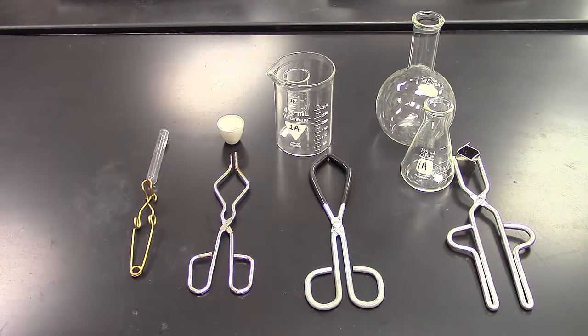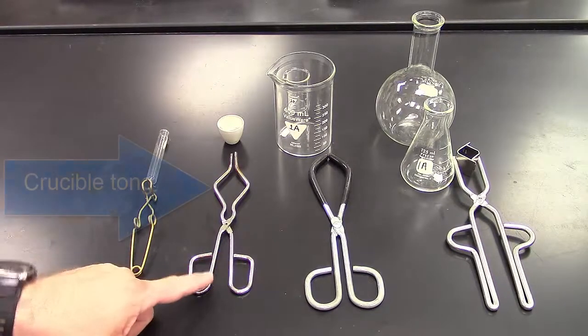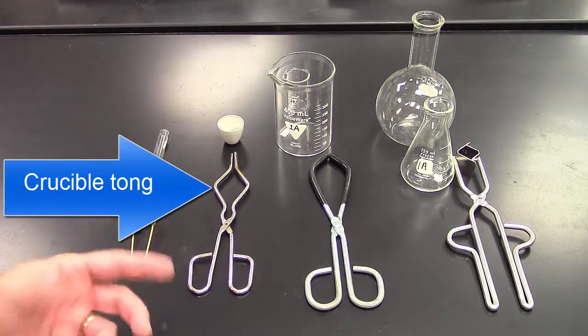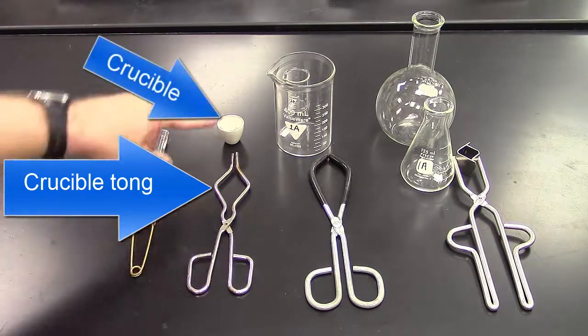In drawer number one, you have a series of tongs or gripping devices. For instance, the first one we have is called a crucible tong. You might be asking, well, why is it a crucible tong, Mr. Wellman? Well, the reason is because it's designed for grabbing crucibles.